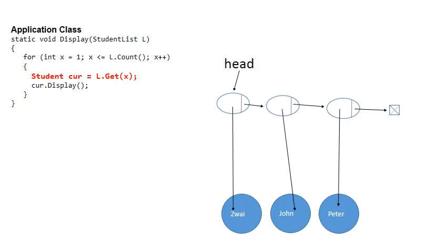In this video, I want to discuss the concept of traversing a single linked list from the application class. Before we start, let's look at the code for a normal array list, where we have the concept of getting something at a specific position. An array list is called a direct access list — you can go to an exact position and fetch something there.